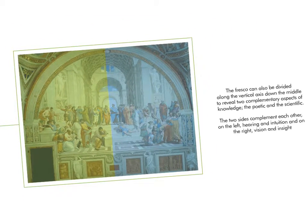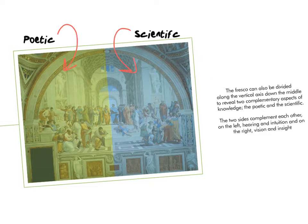Next, we'll talk about how the fresco can also be divided down its vertical axis to reveal two complementary aspects of knowledge: the poetic and the scientific. The two sides complement each other — on the left, hearing and intuition, and on the right, vision and insight.